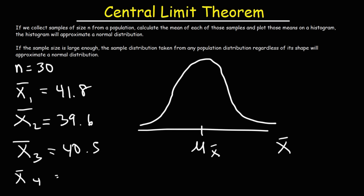That's the gist of the Central Limit Theorem. If the sample size is large enough, the sampling distribution taken from any population distribution, regardless of its shape, will approximate a normal distribution. A good rule of thumb is n is equal to or greater than 30.